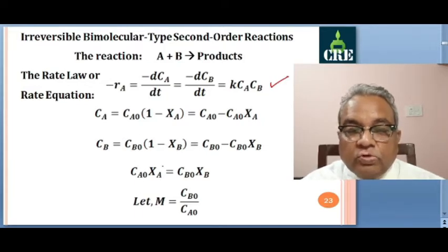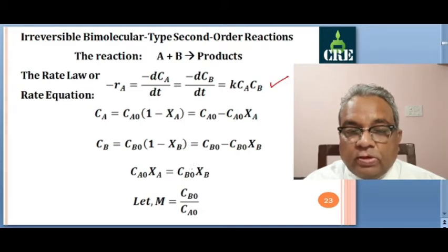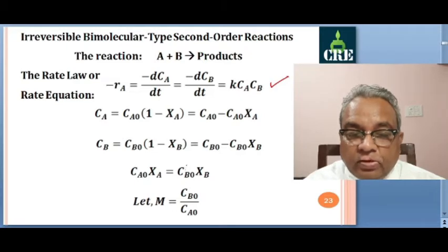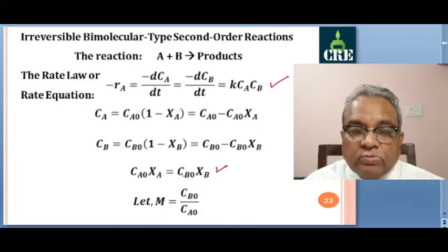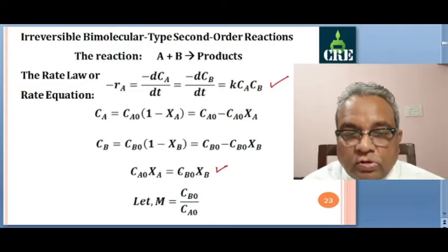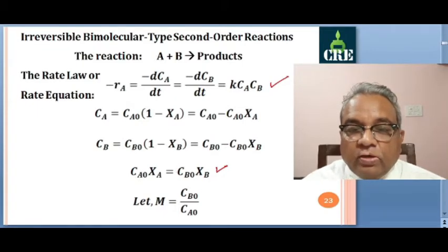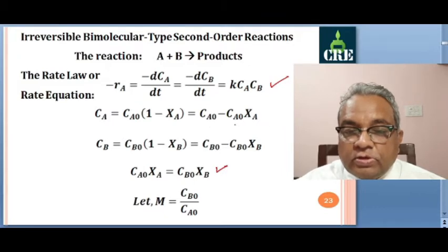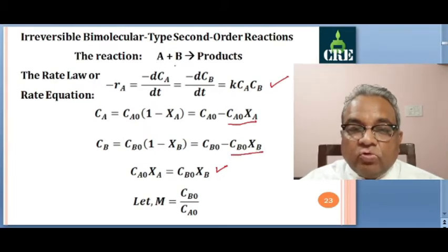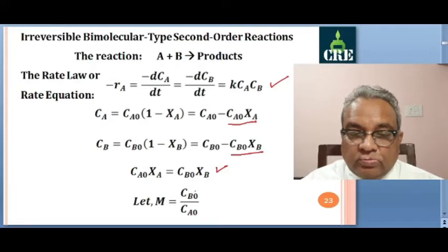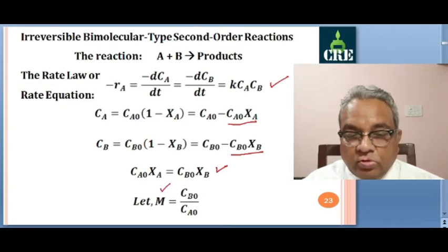CA0 XA is the consumption or conversion of A, and CB0 XB is the fraction converted of B multiplied by initial concentration. For a 1:1 stoichiometry, CA0 XA equals CB0 XB. Whatever the consumption of A, the same is the consumption of B. We consider the ratio of initial concentrations CB0 to CA0, defining M equals CB0 by CA0 as the ratio of the initial molar concentrations of the reactants.